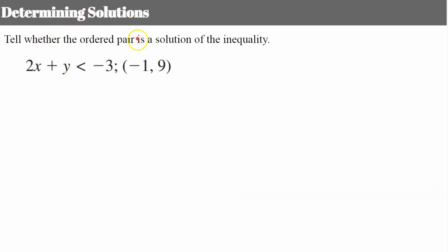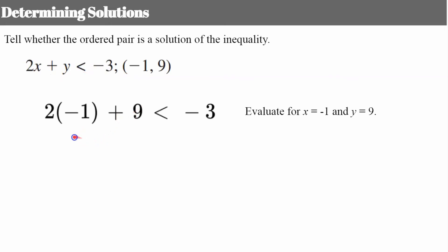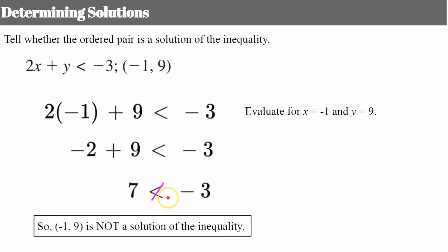Let's talk about determining solutions — this is how you test a point. We're asked: is the ordered pair (-1, 9) a solution to this inequality? Evaluate the inequality for x = -1 and y = 9. Replace x with -1 and y with 9 and do the math: -2 + 9 = 7, and 7 is less than negative 3? Seven is not less than negative three, so this is not a solution to this inequality.